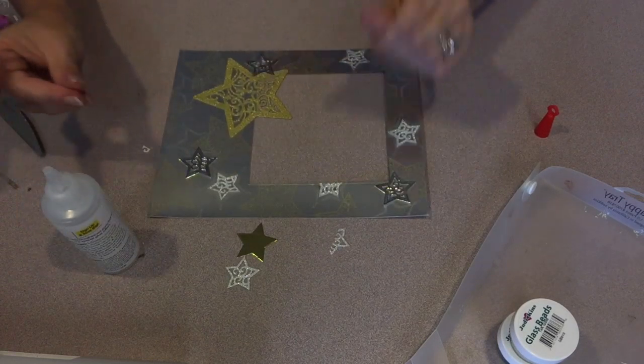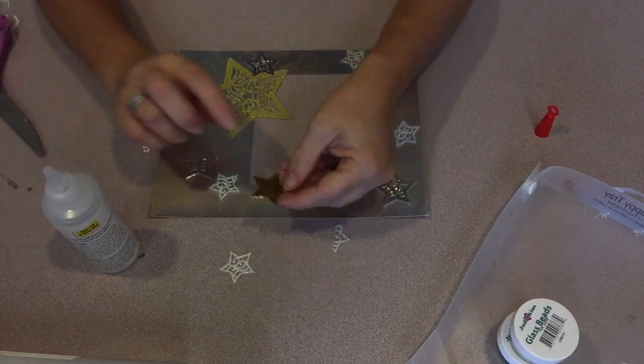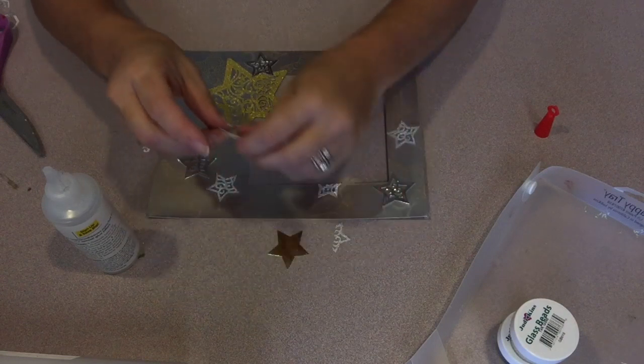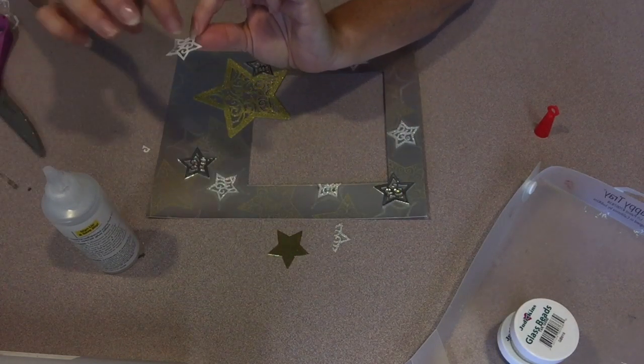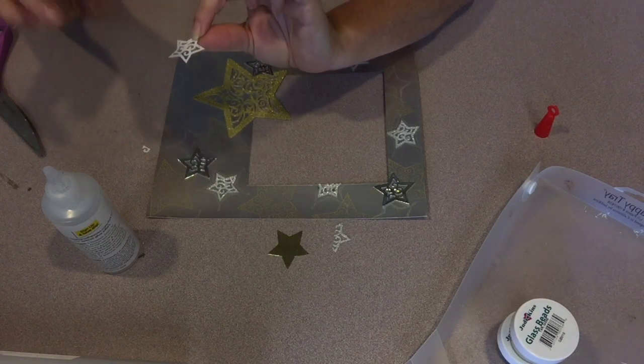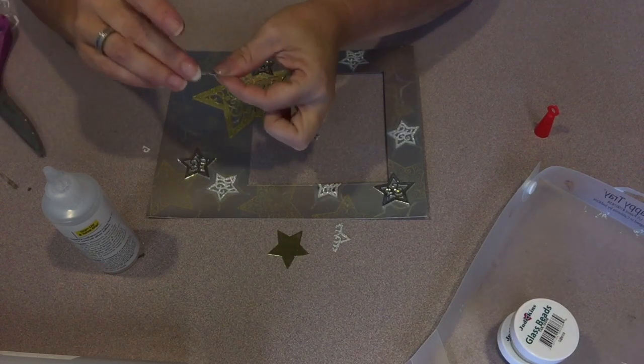And for the last one, I mounted one of the silver glitter stars over one of the gold mirror stars and added that kind of collage style over the largest gold glitter star.